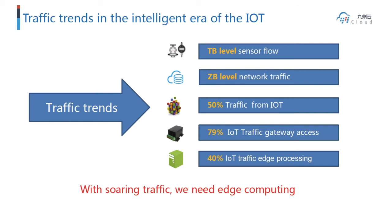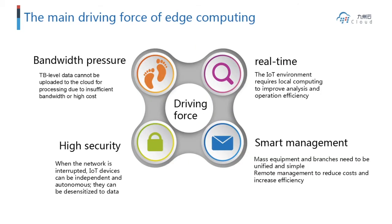Because of traffic trends in the intelligent IoT area, traffic has grown from MB to GB to TB level at the sensor floor, and ZB-level network traffic overall. About 50% of traffic is from IoT devices and 79% of IoT traffic goes through gateway access. Additionally, 40% of IoT traffic should be processed at the edge.